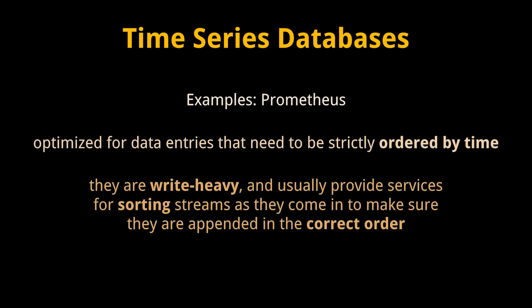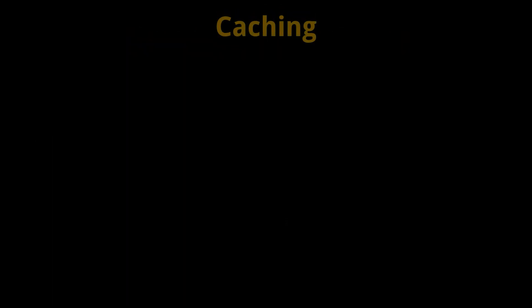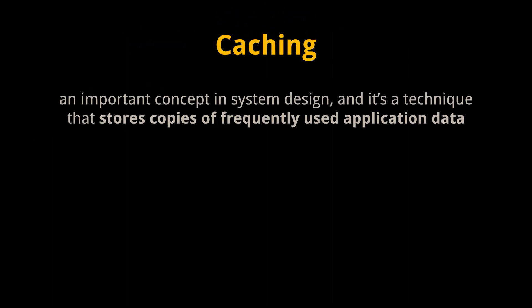Finally, time series databases such as Prometheus are optimized for data entries that need to be strictly ordered by time. The main use case is storing real-time data streams from system monitors. Time series databases are write-heavy and usually provide services for sorting streams as they come in to make sure they are appended in the correct order.